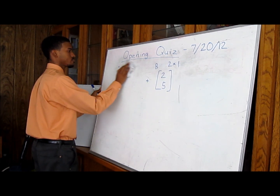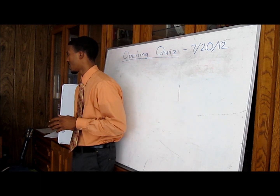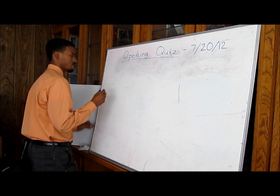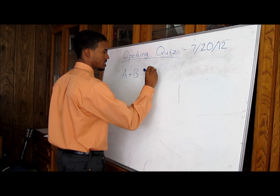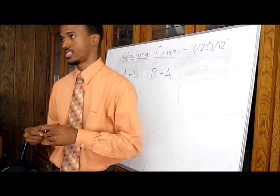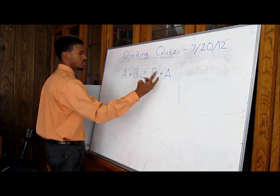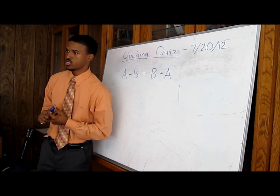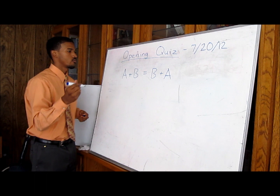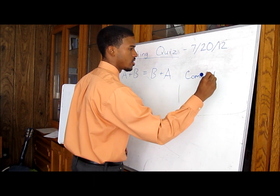Moving on to number three — it states: please identify each property of addition that applies to matrix computation. The first one: A plus B equals B plus A. If we think about the word commute — that's typically when somebody is going to a different place — we think about commutative. The A and B have moved, so this is our commutative property of addition.